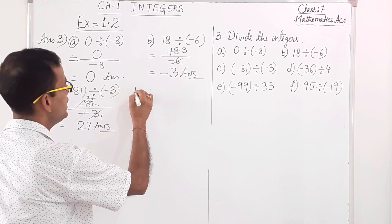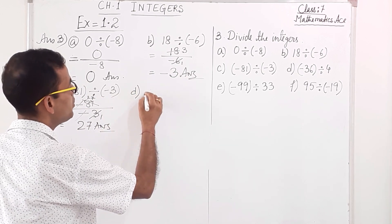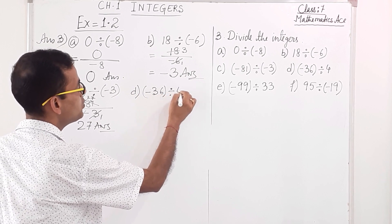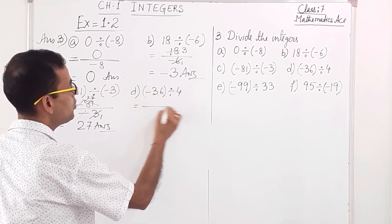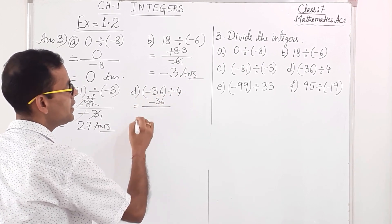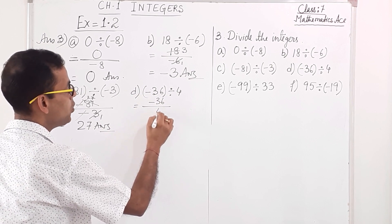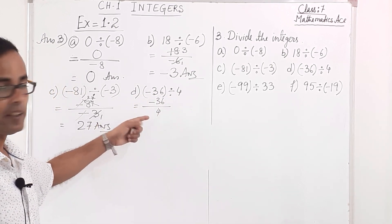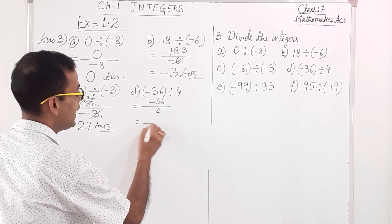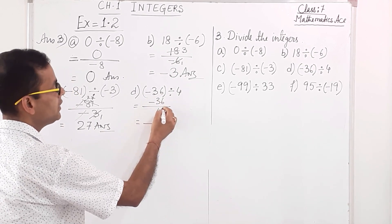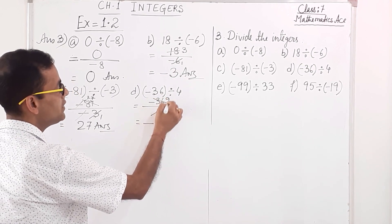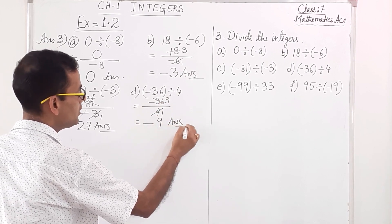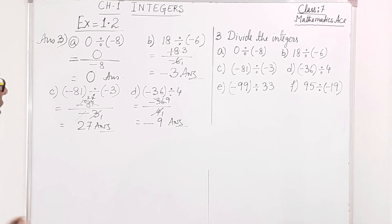Number D: minus 36 divided by 4. Writing it as minus 36 over 4 — negative and positive, different sign — so the answer will be negative. 36 divided by 4: 4 nines are 36. So the answer is minus 9.